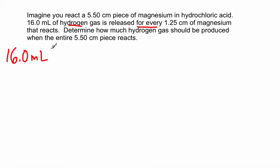16 milliliters of hydrogen gas, so 16 mL of H2, hydrogen gas, is released for every 1.25 centimeter piece of magnesium.